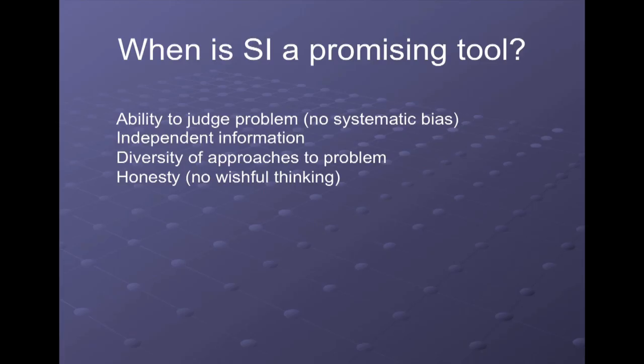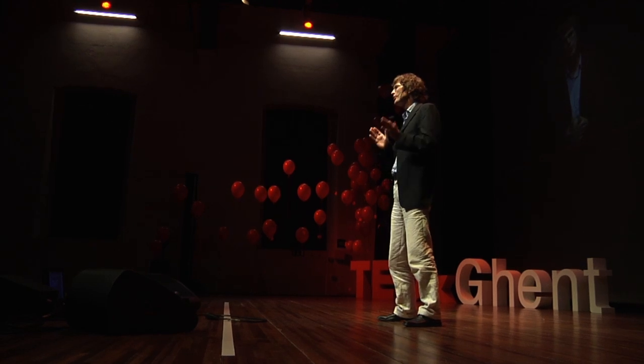If you're faced with the problem of whether swarm intelligence can contribute to your decisions, consider four criteria: the opinions of people should come from those truly able to judge the problem; there should be independent information from these individuals; ideally there should be diversity of approaches for different perspectives; and you need honest answers — people shouldn't be lying or influenced by wishful thinking. If these four criteria are fulfilled, you have a very high probability that swarm intelligence might be helpful. Thank you very much.